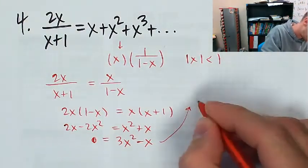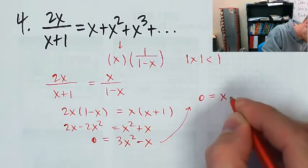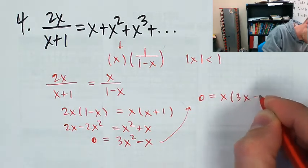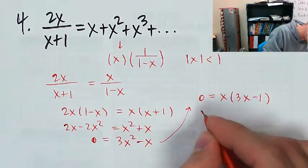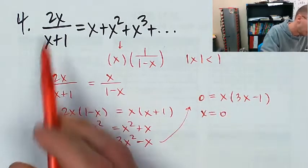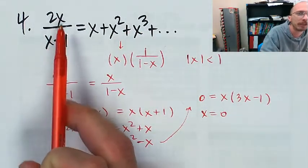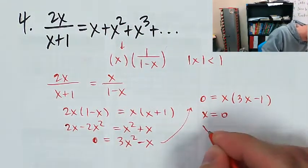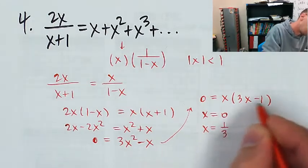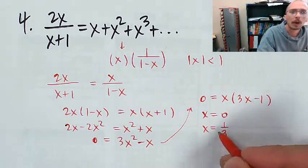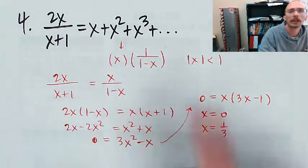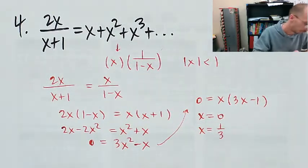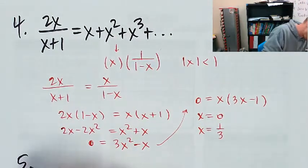Factoring gives 0 equals x times 3x minus 1, which gives us x equals 0 — a trivial solution — and x equals 1/3. Since 1/3 is less than 1, it satisfies our convergence assumption and makes the equation true. That's the main solution.